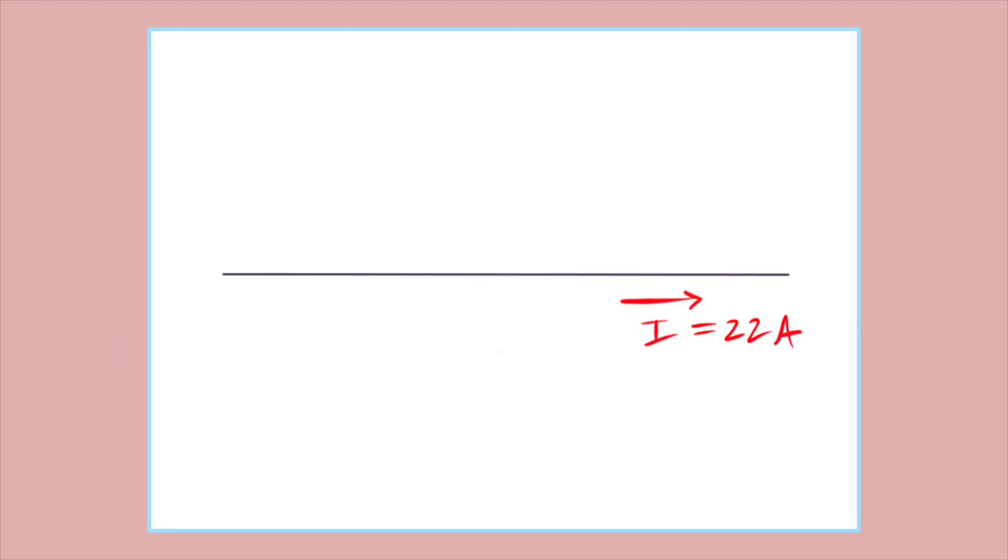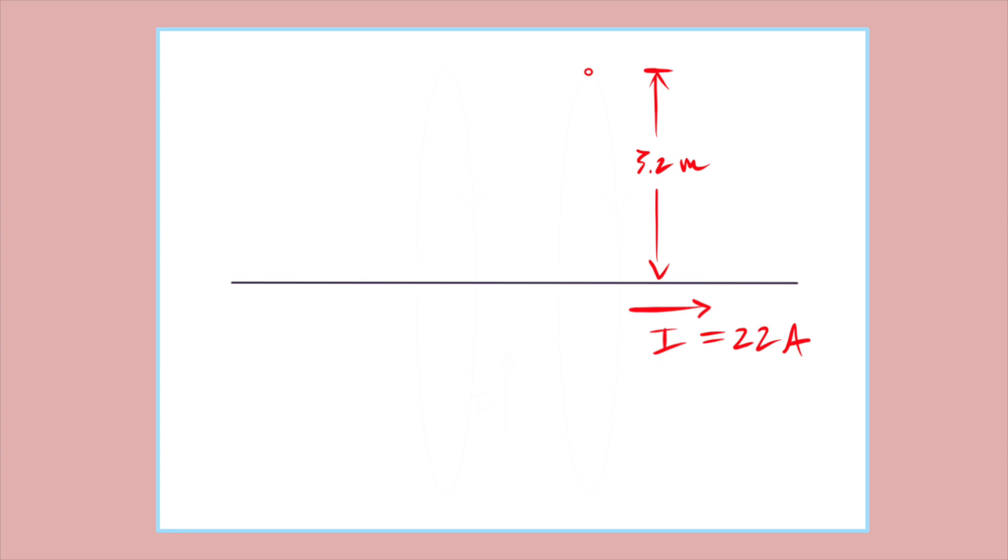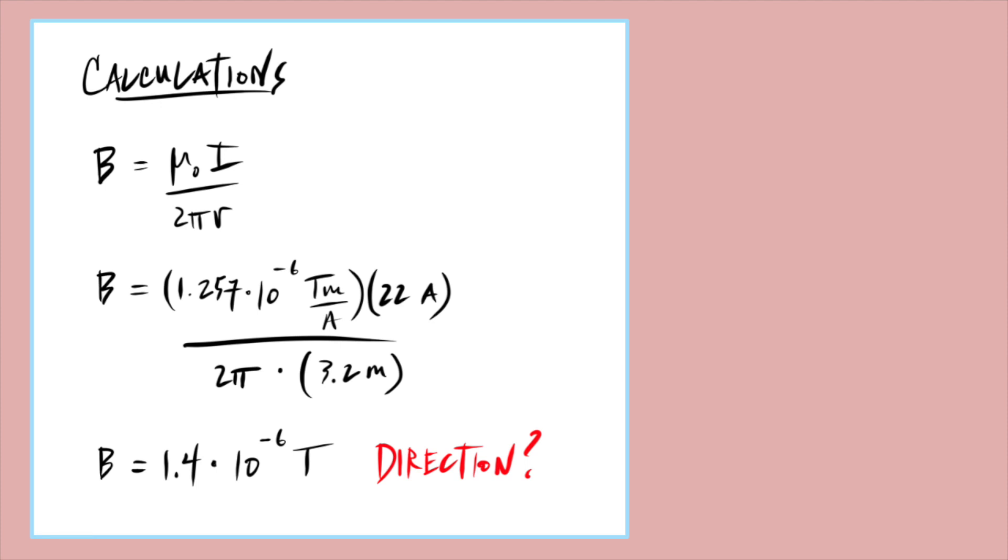Now in my illustration, there is a black wire carrying 22 amps of current to the right. At 3.2 meters above the wire is a dot representing the distance of interest. Now because I know the value of the current and the distance from the wire, and we can assume that the space around the wire is composed of air, I can calculate the strength of the electromagnetic field. According to the formula from before, we find that the strength of the field at that distance is 1.4 times 10 to the negative 6 tesla.